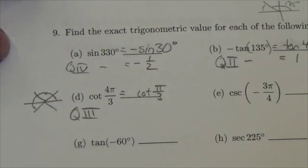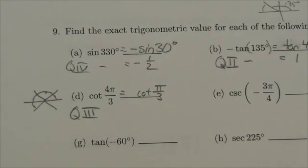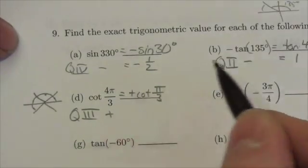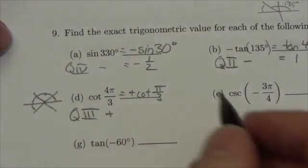Now, cotangent is a reciprocal of tangent. Reciprocating doesn't change signs. It doesn't make positives negatives, negatives positives. They stay the same. So is tangent positive or negative in quadrant 3? Well, the answer is it's positive. So this is going to end up being the positive cotangent of π over 3.